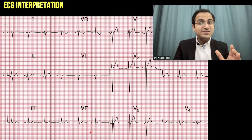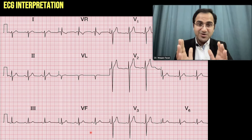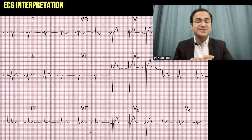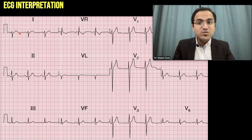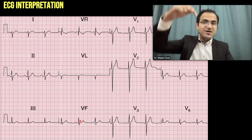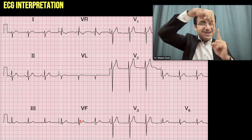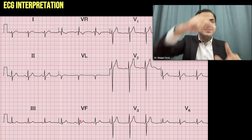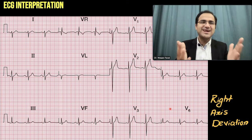Pause the video and solve the next ECG yourself — find out whether it is normal, left axis deviation, right axis deviation, or indeterminate. Coming to the answer: in Lead I, the R wave is negatively deflected — the R wave is downward. In Lead aVF, it is positively deflected. Lead I is downward, Lead aVF is pointing upward and they are reaching toward each other — 'Right Reaches' — so this is right axis deviation.